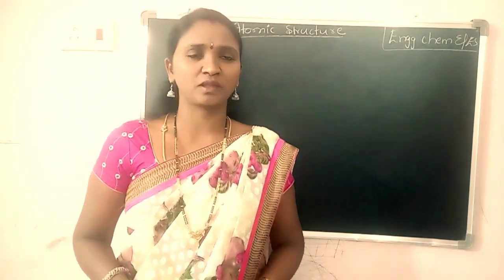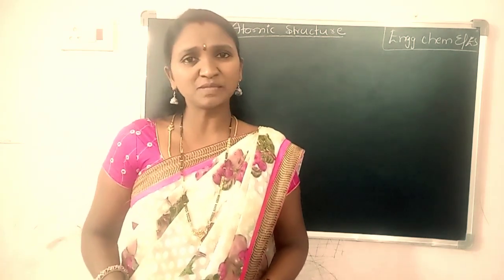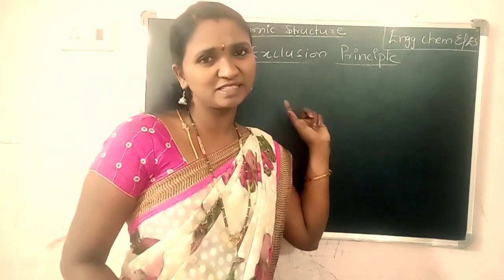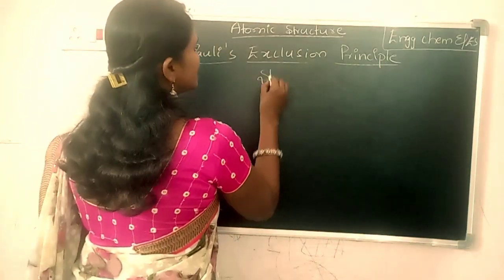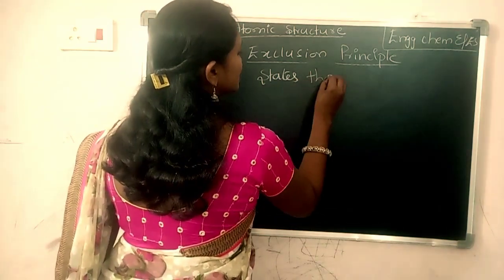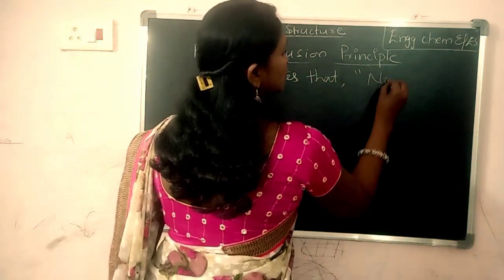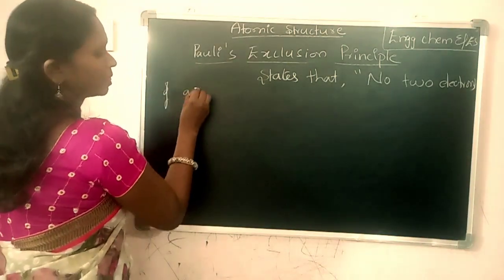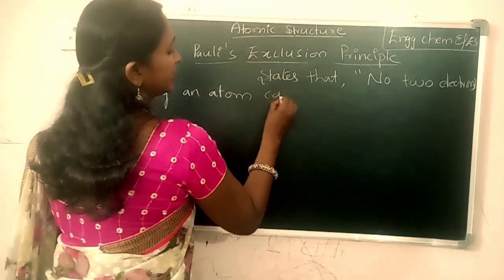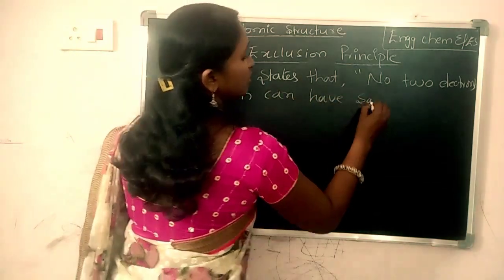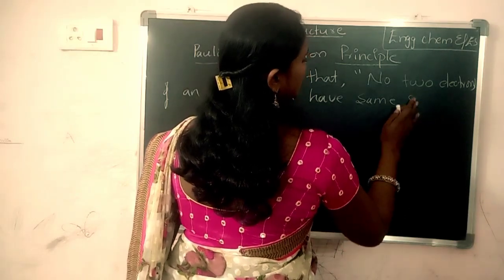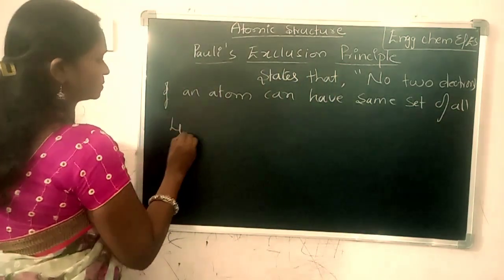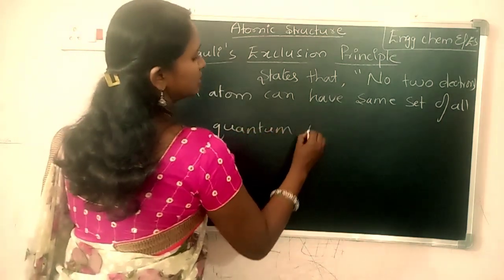Let us see what Pauli's Exclusion Principle tells about the arrangement of electrons. The statement is: Pauli's Exclusion Principle states that no two electrons of an atom can have the same set of all four quantum numbers.